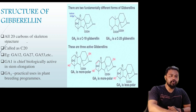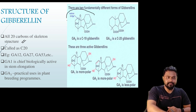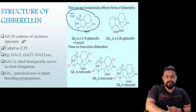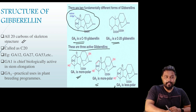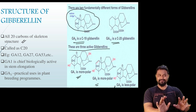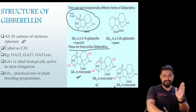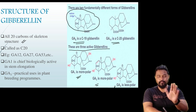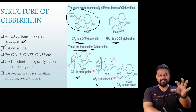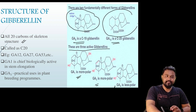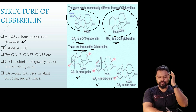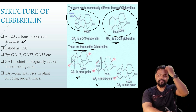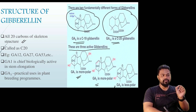Next, structure. All gibberellins have a 20-carbon skeleton structure. GA9 and GA12 are key structures. There are three active gibberellins: GA1, GA3, and GA4. The mono-ring structure is very important. This is the structure of gibberellin.